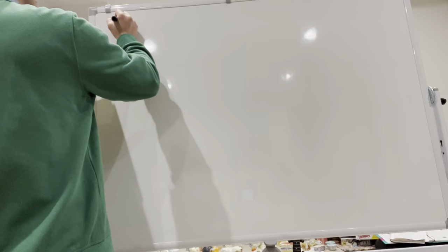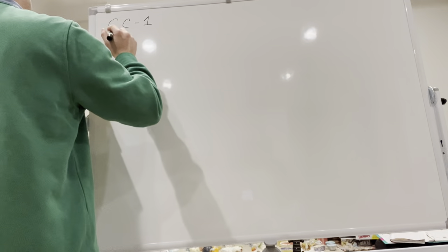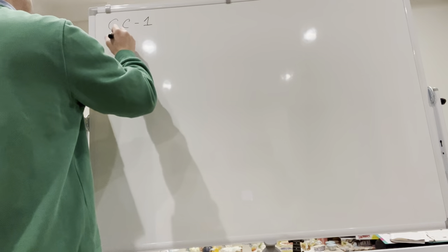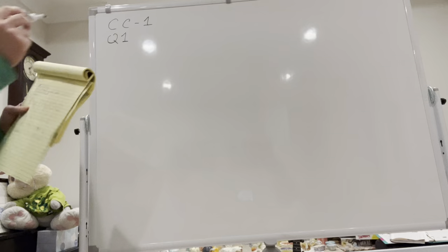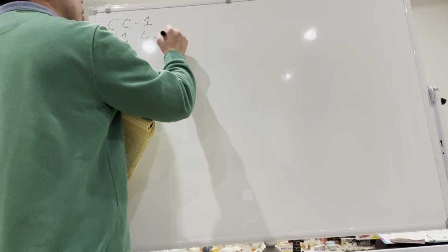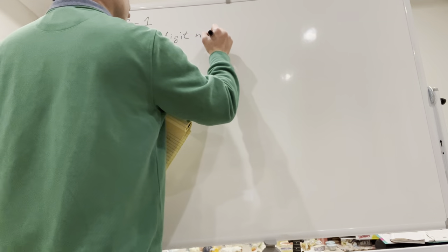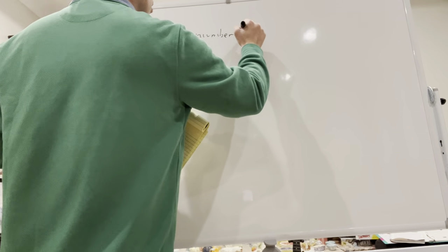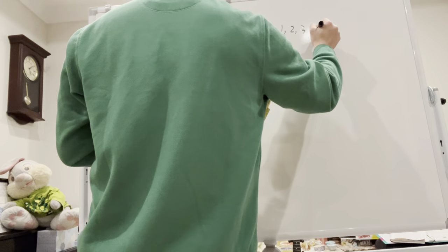To begin, let's go over one of the questions in the homework. This is from the first counting and combinatorics class. The question I want to talk about is the first question, which goes like this: how many ways can we make a four-digit number from 1, 2, 3, 4, 5?